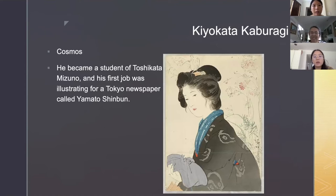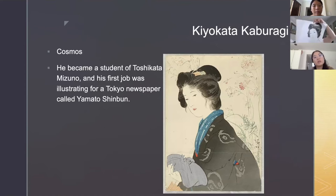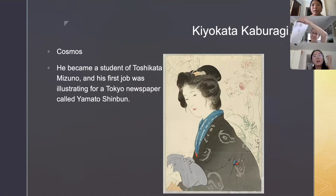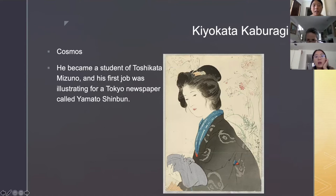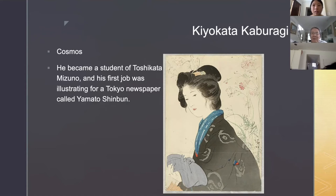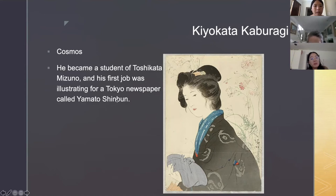Kiyokata Kaburagi — 'Cosmos.' He became a student of Toshikada Mizuno and his first job was illustrating... Oh wow, is this the one you copied? Yes, this is the one I copied, but I didn't have time to do the color and also the flowers. Oh cool — I like your painting! His first job was illustrating for a Tokyo newspaper called Yamato Shinbun.